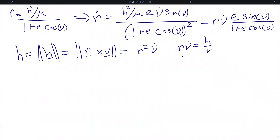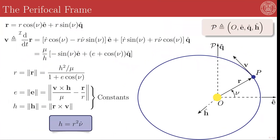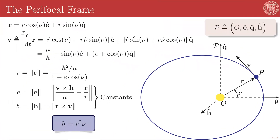If we take these results and plug them back into the velocity expression, it simplifies down to just mu over h times negative sine nu in the e-hat direction and e plus cosine nu in the q-hat direction.